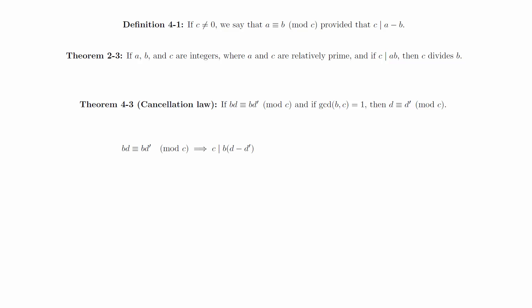Note that c divides b times d minus d prime. Then by theorem 2-3, since the GCD of b and c is 1, we must have that c divides d minus d prime. In other words, d is congruent to d prime mod c.